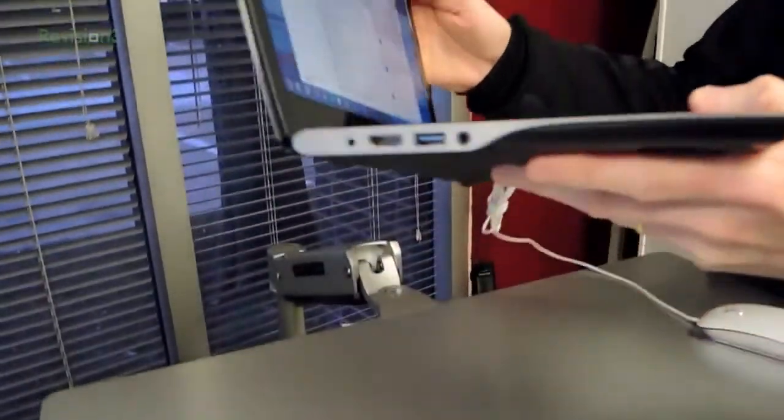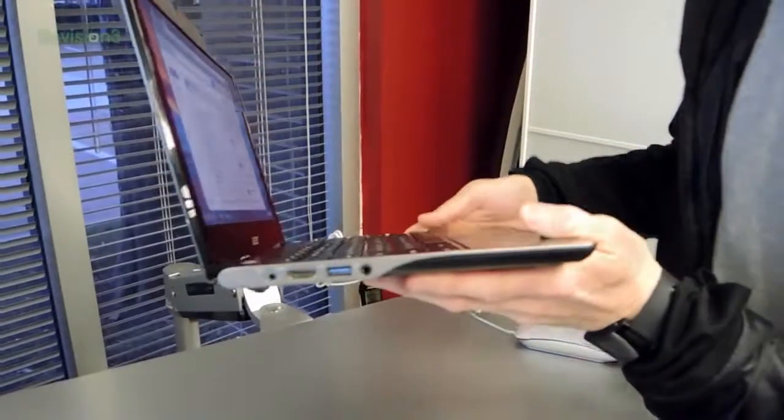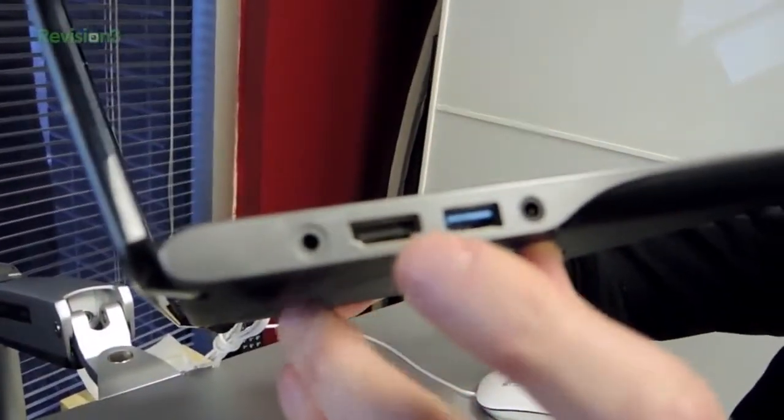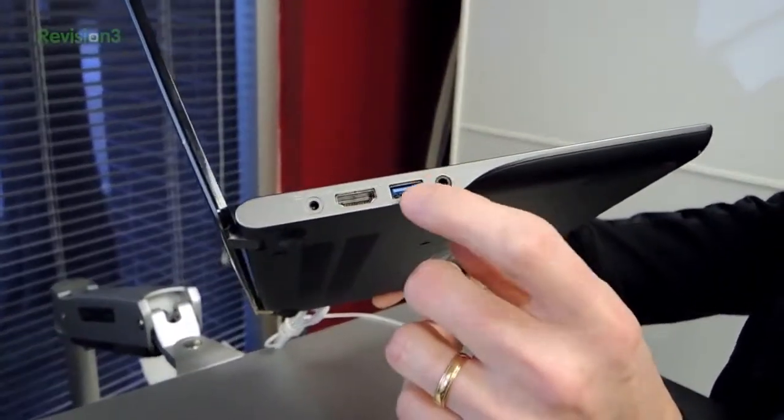You will see that it's very thin, it's very light, and it's got a few ports on it. So first of all, it's got an HDMI output, so we can actually hook this to a bigger monitor. It's also got USB 3.